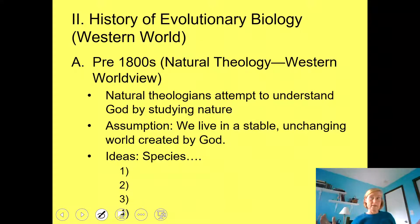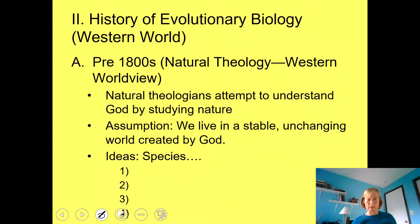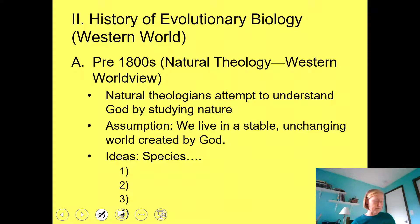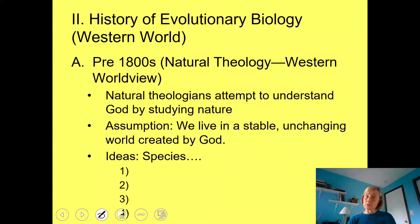Natural theologians looking at organisms in the world emphasized the following things: species never change in their form or behavior over time — they are unchanged and stable, just like the world God created. Species don't go extinct, there are no extinctions, and no new species arise. This worldview emphasized that species are unconnected and unrelated — they were created by a creator at one point in time in an instantaneous act. That's what Western theology was like in the 1700s and 1800s.